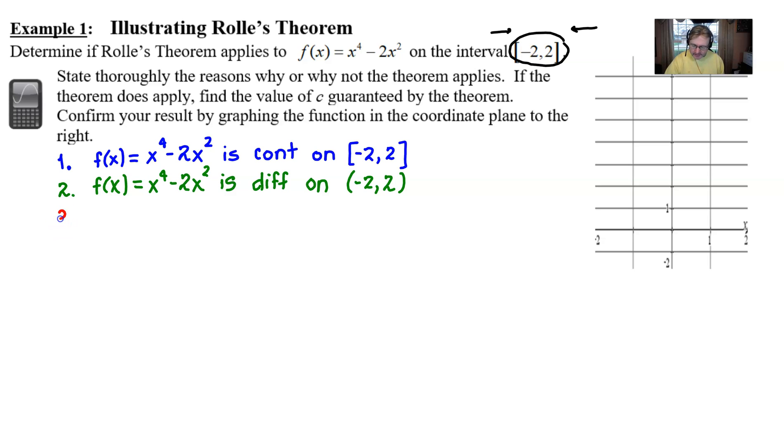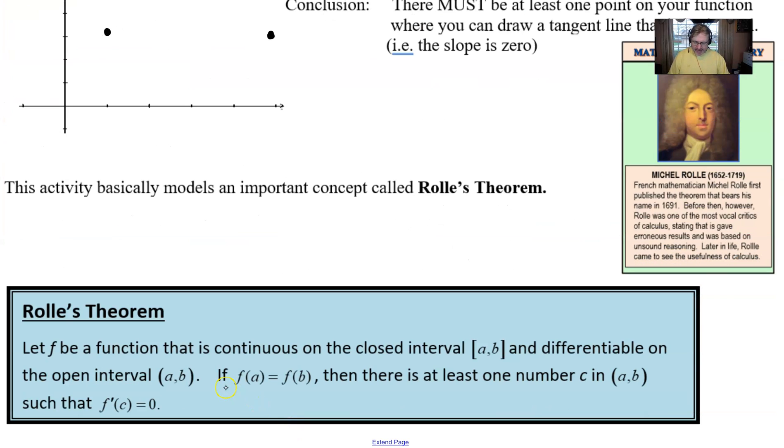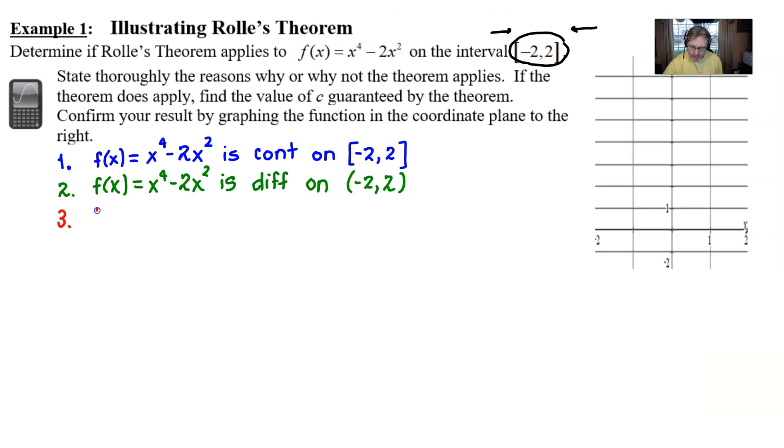And then our third criteria for Rolle's theorem states, and if you think back to the theorem, I can scroll back here, it's this idea that f(a) has to equal f(b). So you have to physically show what is f(-2) and does it equal f(2). And so if we plug those in, you can see that you get (-2)^4 minus 2 times (-2)^2. And is that indeed equal to 2^4 minus 2 times 2^2? And after you just do a little bit of mathematics here, you should come to the realization that this is indeed going to be 16 - 8 on both sides. And as soon as you have shown numerically beyond a reasonable doubt that those are equal, you're all good to go.